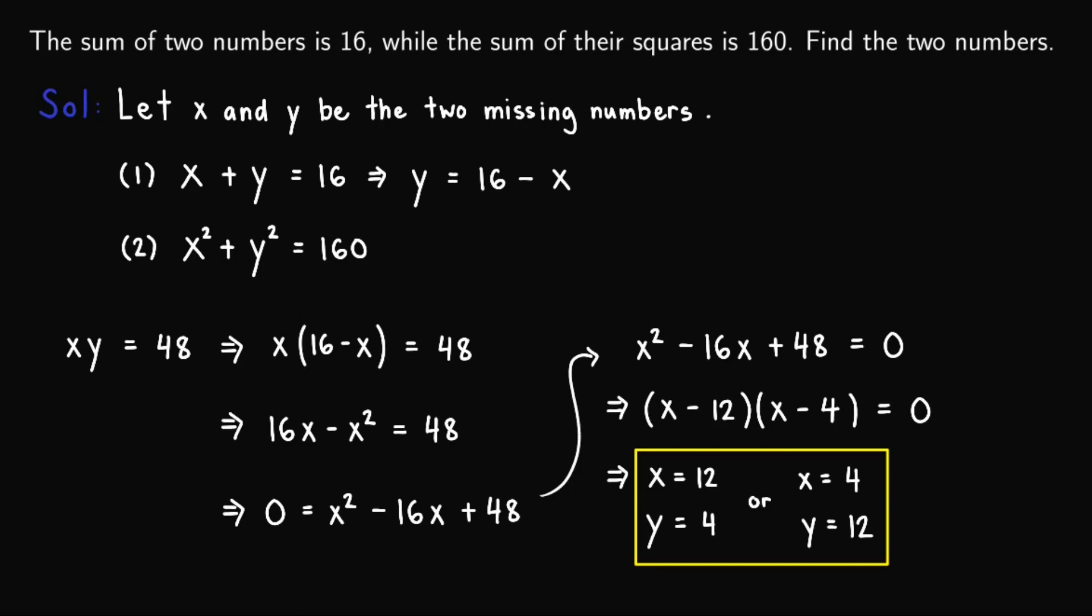Since we already found the two numbers, 4 and 12, when we add them we obtain 16. And when we add their squares, that is 4 squared plus 12 squared, this equals 16 plus 144.